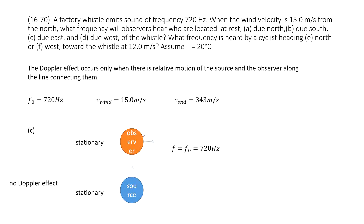Similarly, if the observer is due east, there is no Doppler effect, so the frequency equals the original frequency. If the observer is due west, there is still no relative motion, no Doppler effect, and the frequency equals the source frequency.